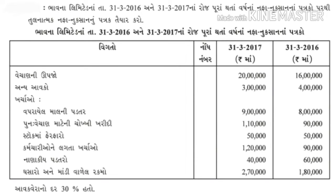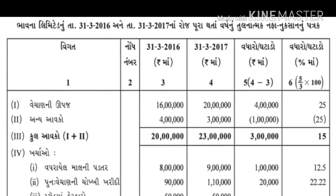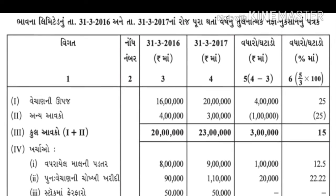ખસારો અને માંડી વળેલ ખર્ચ - 2017ની અંદર 2 લાખ 70 હજાર, 2016ની અંદર 1 લાખ 80 હજાર. વધારાની માહિતી - આવકવેરાનો દર 30%. સૌથી પહેલા, આ વિગતો આધારે - ભાવના/પાવના લિમિટેડ - 31/3ના રોજ.